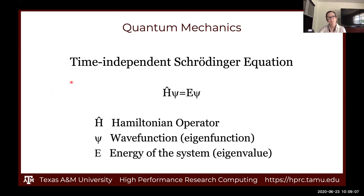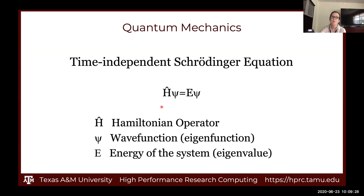What we're going to be doing with quantum mechanics is solving something called the time-independent Schrödinger equation. This is an eigenvalue problem. We have this Hamiltonian operator operating on something called a wave function — the eigenfunction — which gives us the energy of our system. The goal of this course is to go over the forms of the Hamiltonian and the wave function used in traditional quantum mechanics calculations on molecular systems.